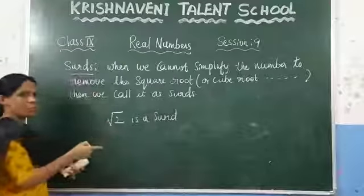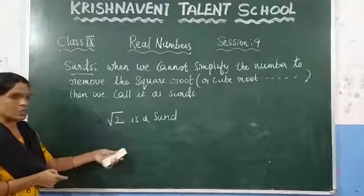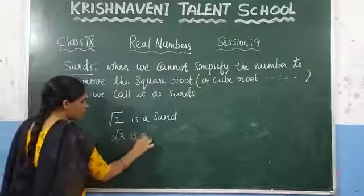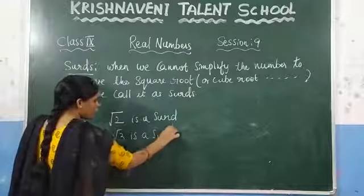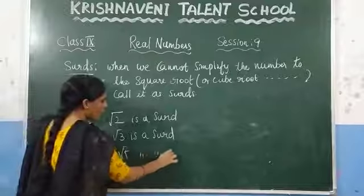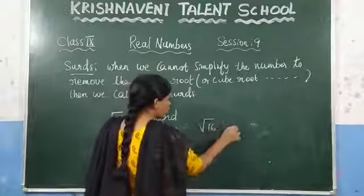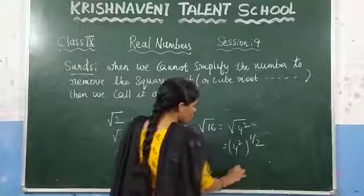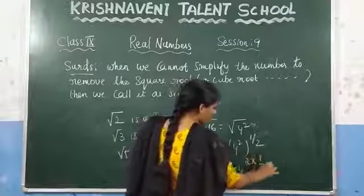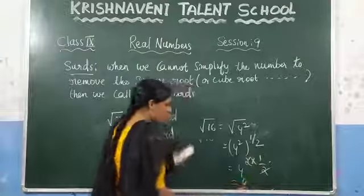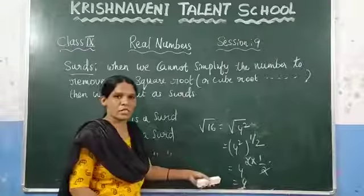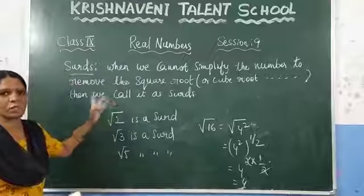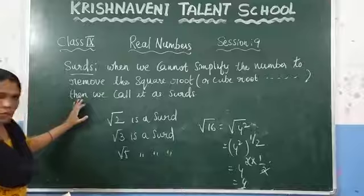Similarly, square root of 3 is a surd and square root of 5 is also a surd. But if you consider square root of 16: it is not a surd, because 16 equals 4 squared, so 4 squared to the power 1 by 2 gives 4 — we have removed the square root. So when we cannot simplify a number to remove the square root, cube root, or any root, that is called a surd.